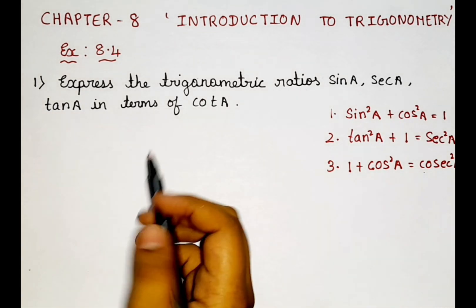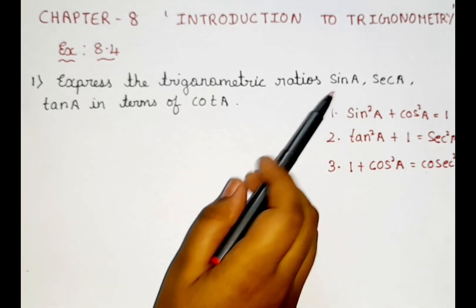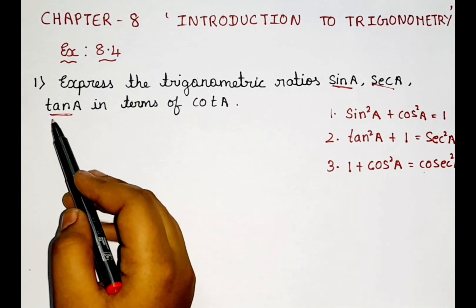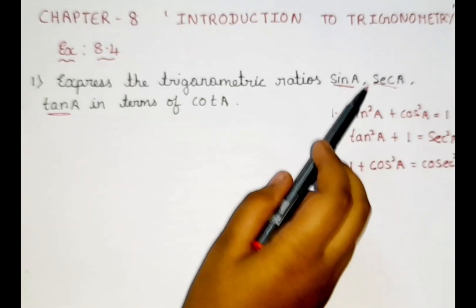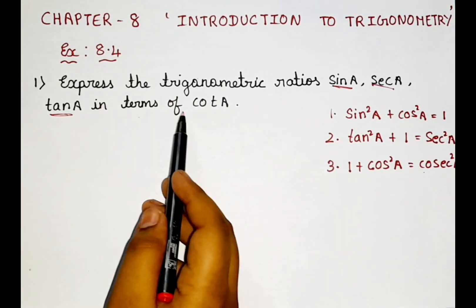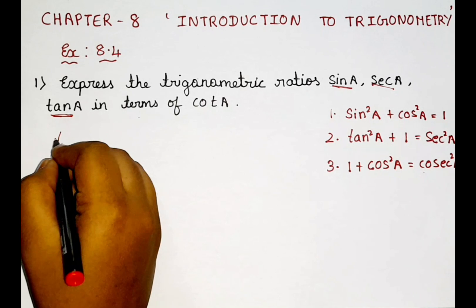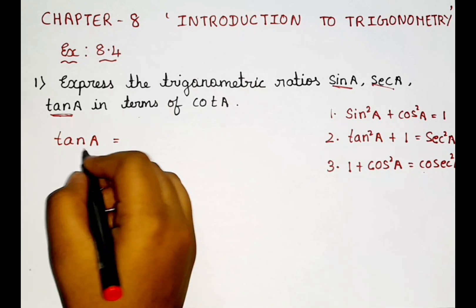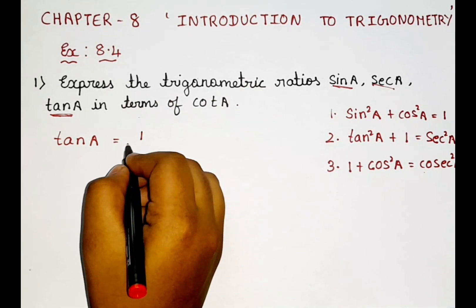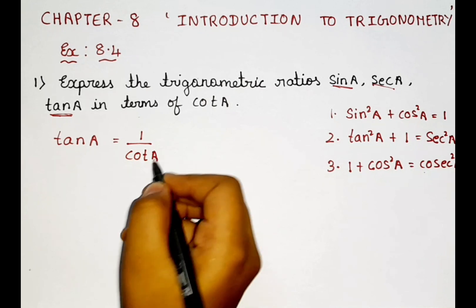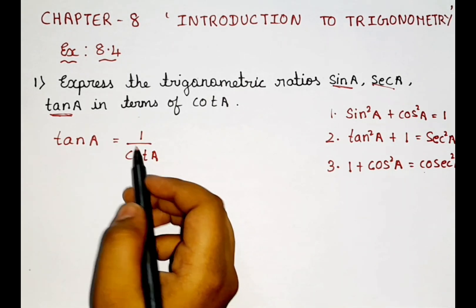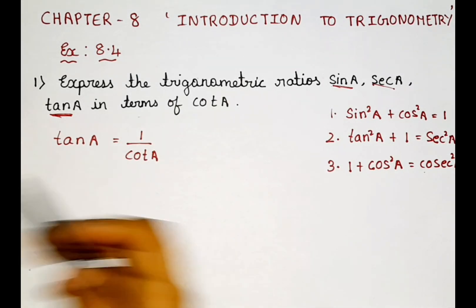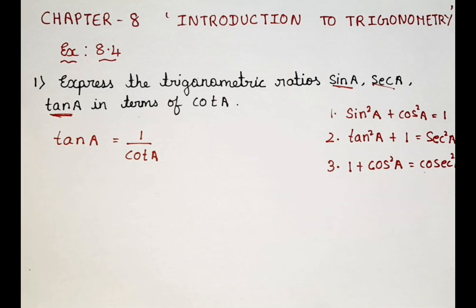We have to use these identities to find the answers. We have sin A, secant A, and tan A to solve. First, I will take tan A. Do you guys know a formula for tan A? There is a formula: tan A = 1/cot A. So finally we got cot A, and this is going to be our answer for tan A — we just converted tan into cot.